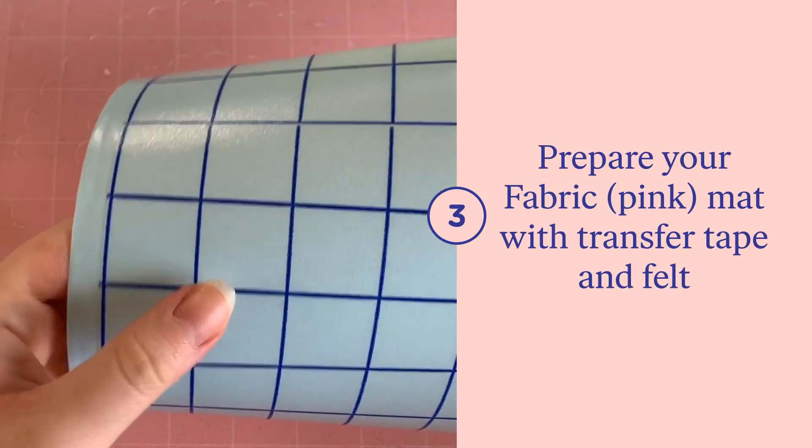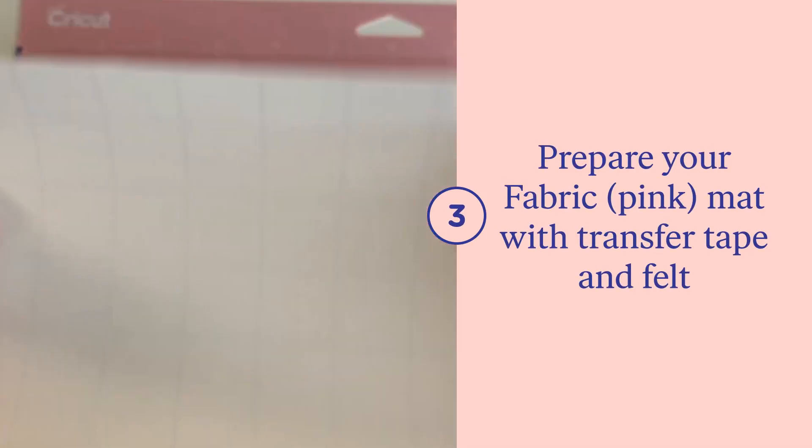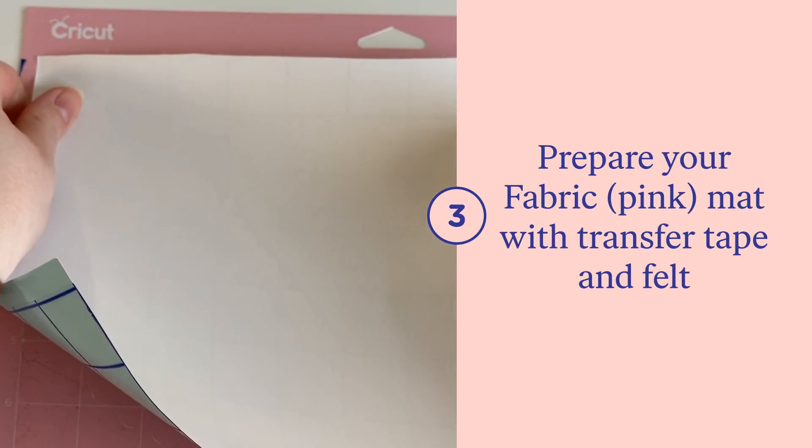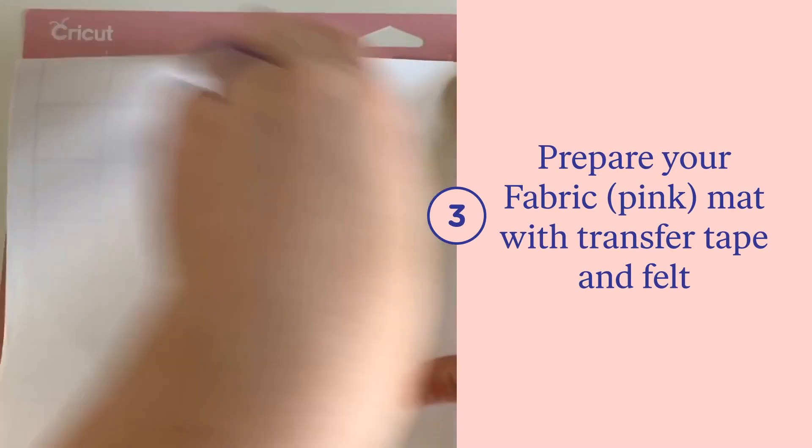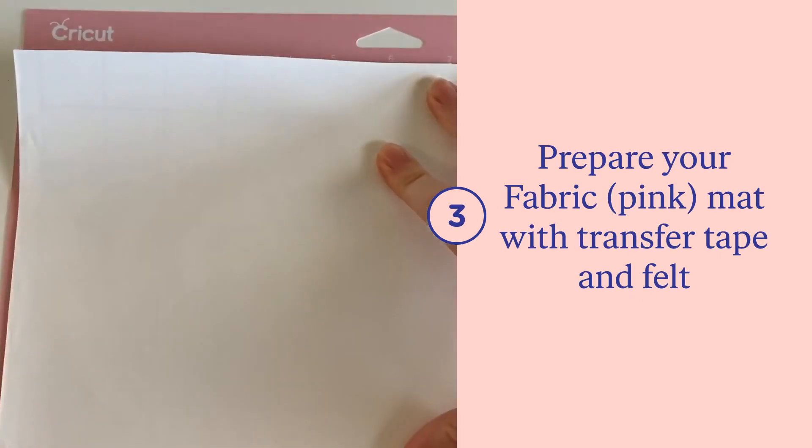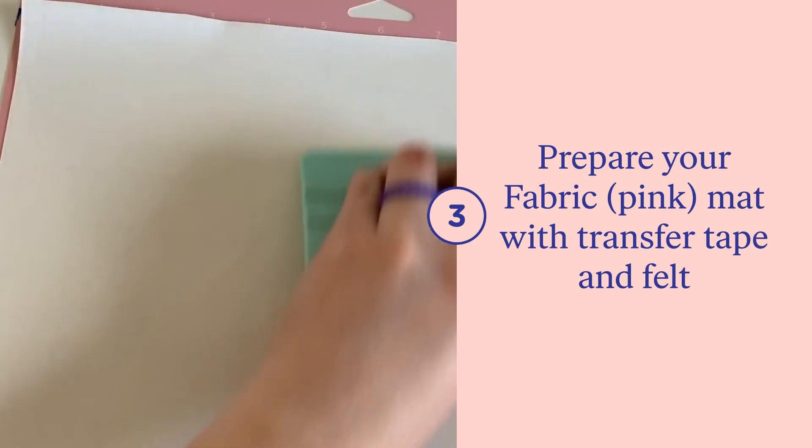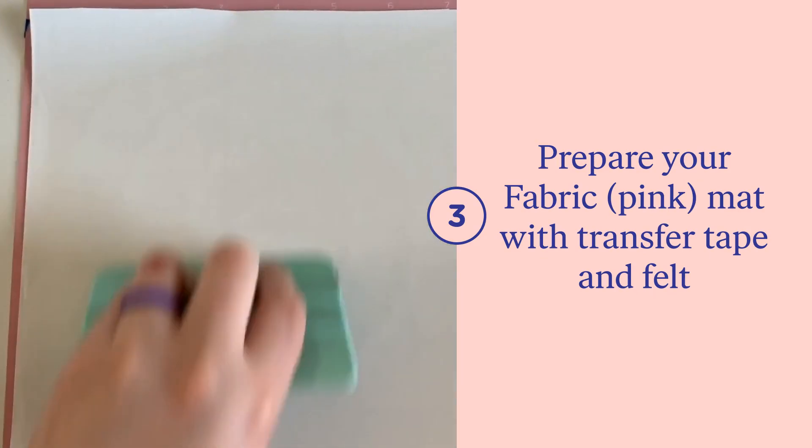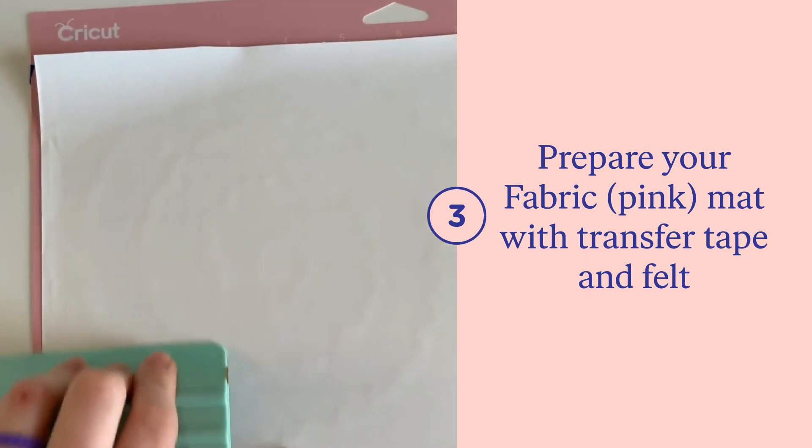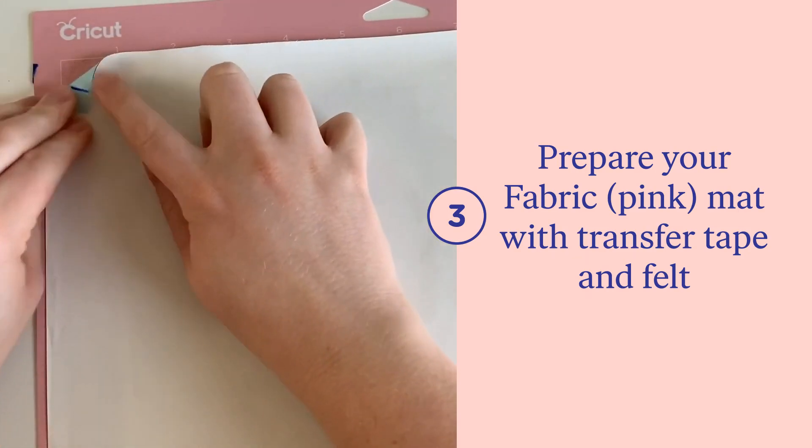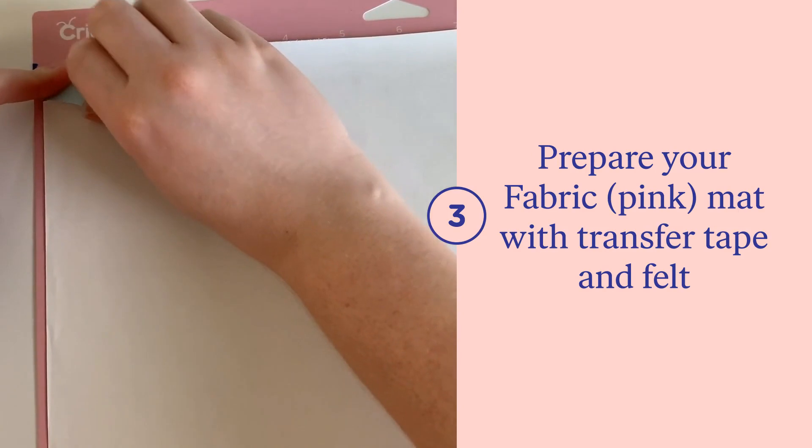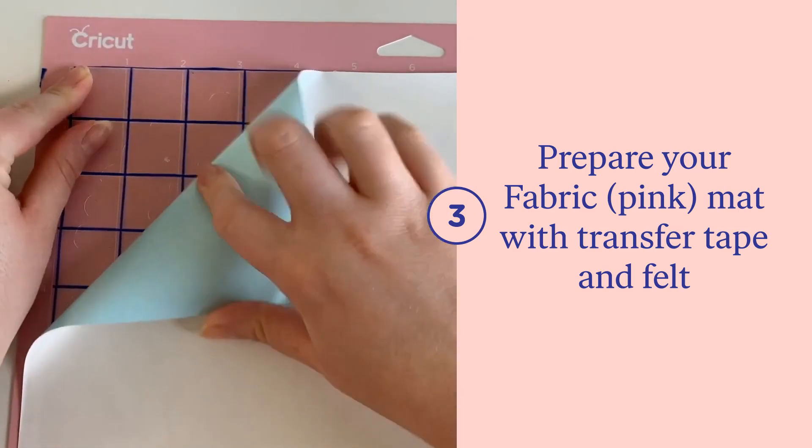Next, you need to prepare your mat. Start by putting a piece of transfer tape with the non-sticky side down on the mat in the top left corner where you're going to put your felt. This will keep your mat from getting covered in the little fuzzies left behind from the felt and will help hold your felt in place while you're cutting it. Then remove the backing so that the sticky side is facing up on the transfer tape.